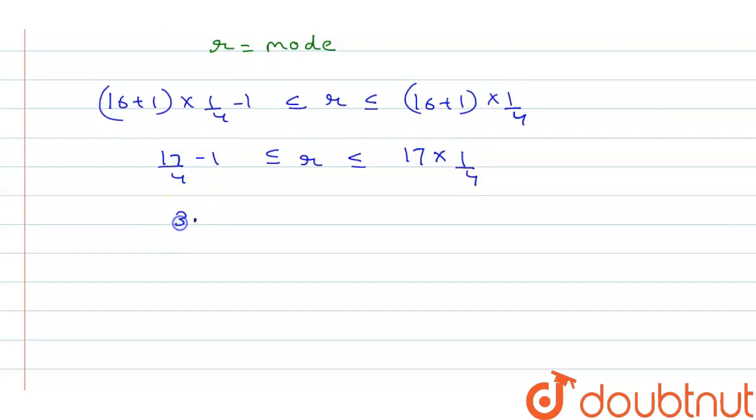So basically this equal to 3.25 is less than equal to r less than equal to 4.25 but we know that r is only integral value and in this range we can say that r equal to 4 is only integral value.